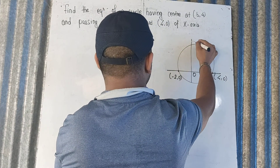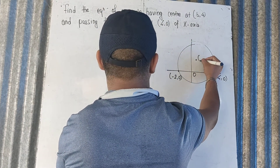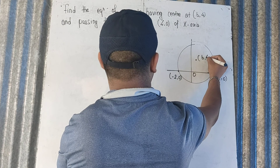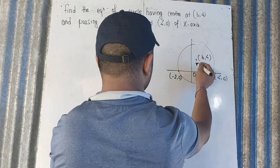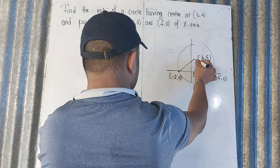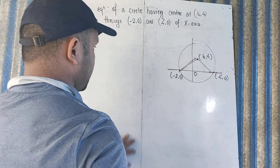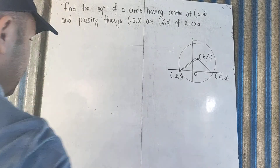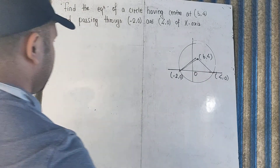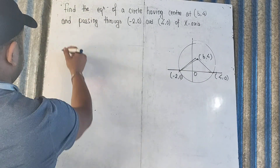Now, if you want to use the center (b,4), then you can use the radius of the circle. If you want to use the radius of a circle, then you can use the radius of the circle.